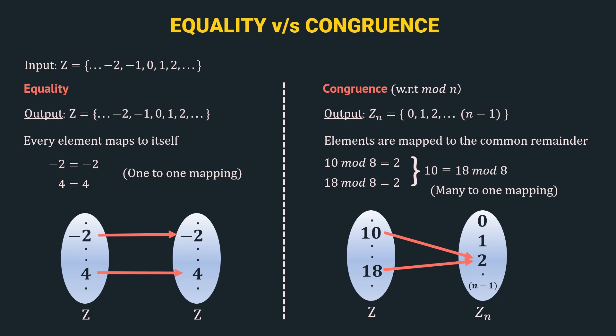And that's the whole concept of congruence — that if two numbers are congruent to each other with respect to mod n, then they share the same remainder, and all the remainders are from set Zn. So, in a nutshell, congruence is a many-to-1 mapping from Z to Zn. I have tried my best to simplify this concept as much as possible and I hope it's clear. If you have any doubts, please let us know in the comment section. Now, let's understand modular arithmetic.